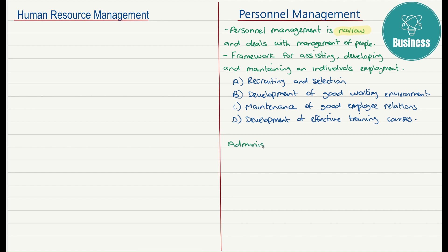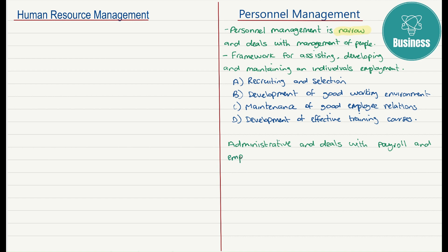What we want to get across in this session is that the HR function is wider — it looks at those four points, A, B, C, and D. Personnel management is much narrower. It tends to be more administrative and deals with items such as payroll and employment law. The personnel management function is really focused in on payroll and employment law.